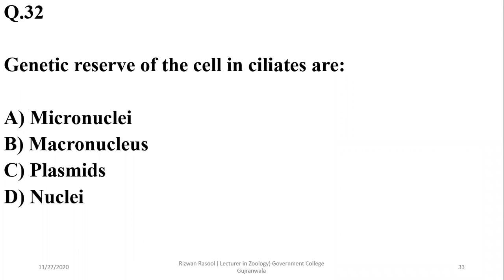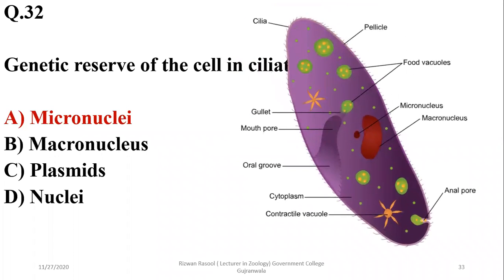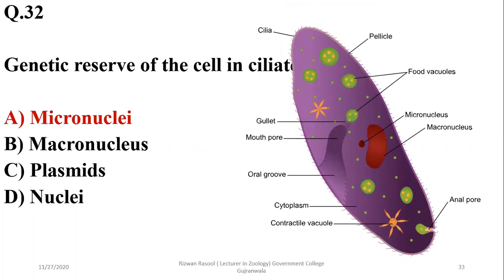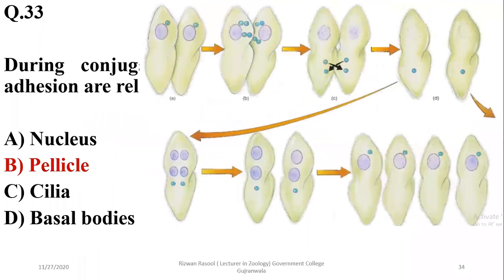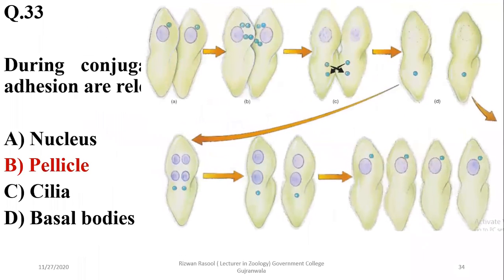Question thirty-two: the genetic reserve of cells in ciliates is the micronucleus, while the macronucleus controls metabolism. The correct option is A. Question thirty-three: during conjugation in ciliates, sticky secretions for adhesion are released by the pellicle, and conjugation involves the exchange of micronuclei for genetic recombination.